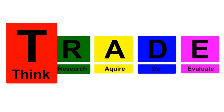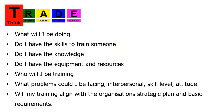First step: T for Think. Before we do anything, let's think about this. What am I going to be doing? Obviously, I'm going to be training somebody on using the hose cutoff saw. Do I have the skills to train somebody? Do I have the knowledge — do I know how to use the machine myself? Do I have the equipment and resources to train somebody? Who will I be training? What problems could I be facing — personal skill level, bad attitude? Will my training align with the organization's strategic plan and basic requirements?